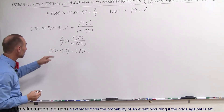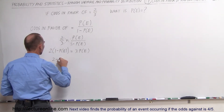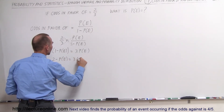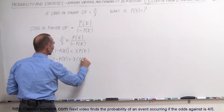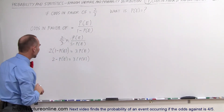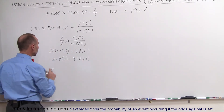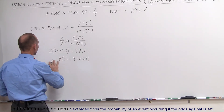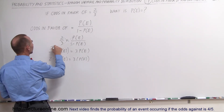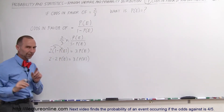Now we expand the parentheses. The two distributes over both terms, so we get two minus two times the probability of the event occurring is equal to three times the probability of the event occurring.